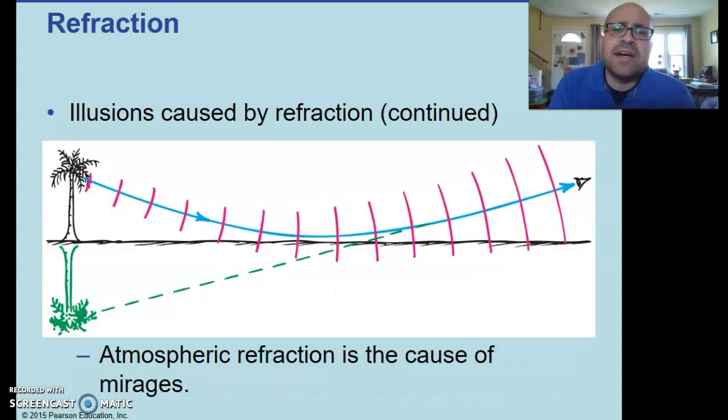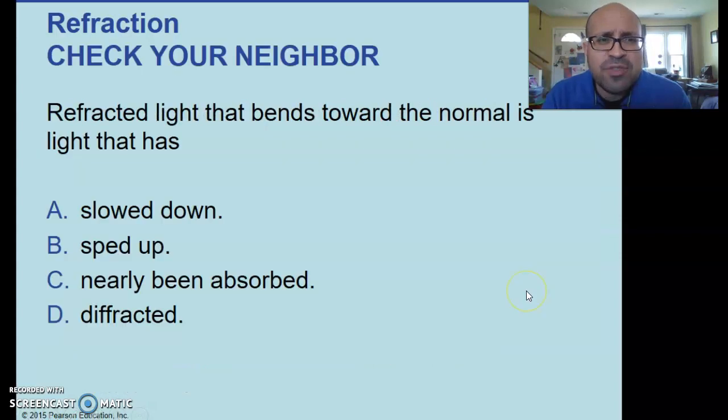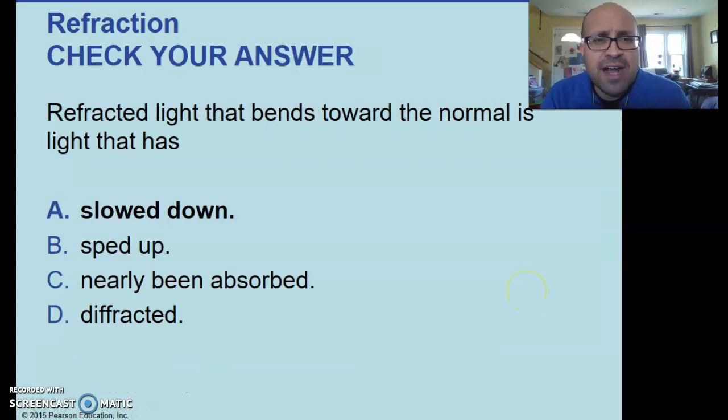This is the explanation for a mirage. Without getting too in-depth on this, light refracts causing you to think that something is where it isn't. So usually up here, if you have nice blue clouds, you tend to think there's blue water there. And with time running out here, refracted light that bends towards the normal line has been slowed down.